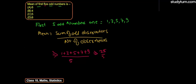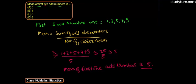Dividing by 5, the mean of the first 5 odd numbers is 5. So our correct option will be option C.